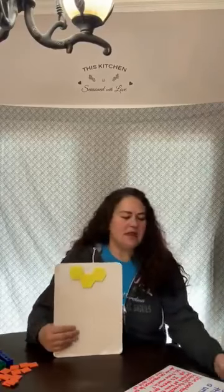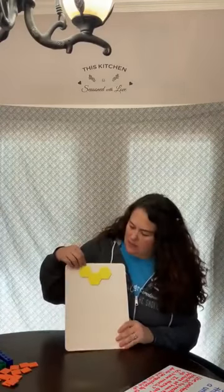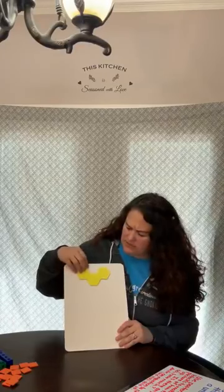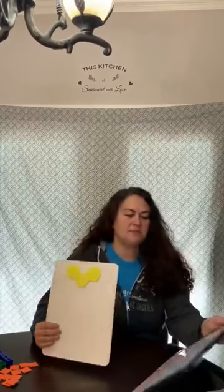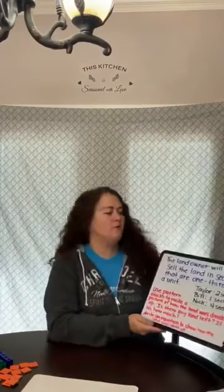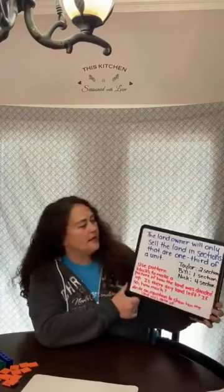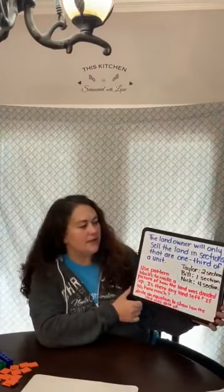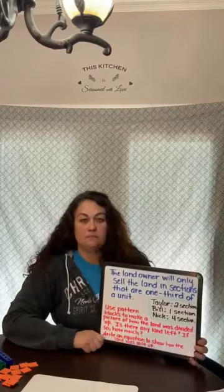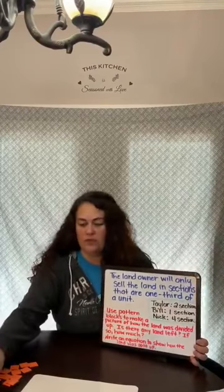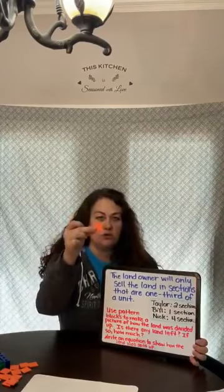Our task today is about a landowner who is going to sell three sections of his land, represented here with our hexagons. Each one of these represents the land. Here's our first part of the task: the landowner will only sell the land in sections that are one-third of a unit. So one-third — these will represent our thirds today.